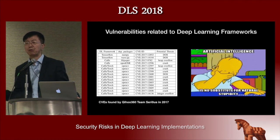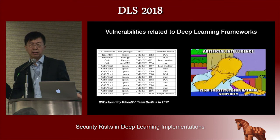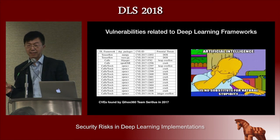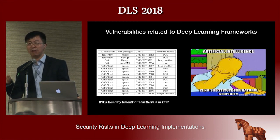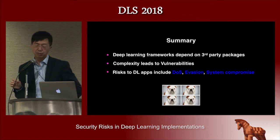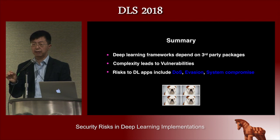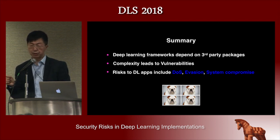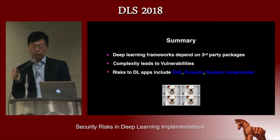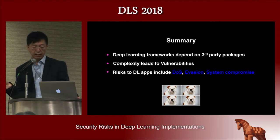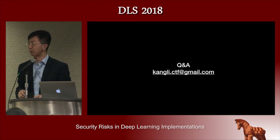These are just a few examples — we found more bugs over the summer. The list is in the paper with additional details. There's a saying: 'Artificial intelligence is no substitute for natural stupidity' — meaning if you have lazy or careless programmers, there will be bugs. To summarize: deep learning frameworks heavily depend on third-party packages, and that complexity leads to security vulnerabilities. Those vulnerabilities in these applications can lead to misclassification, evasion, denial of service, and system compromise. That's all I have for today.